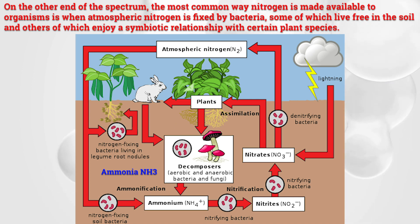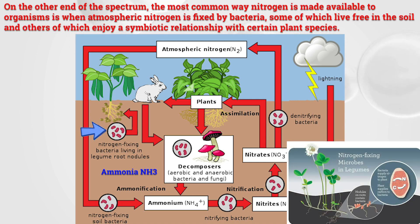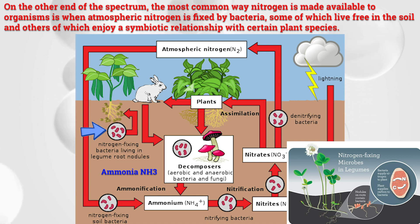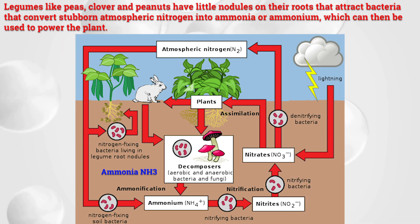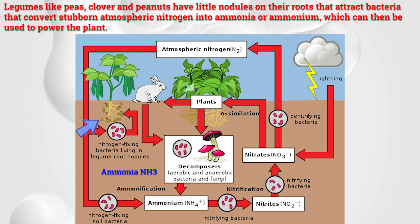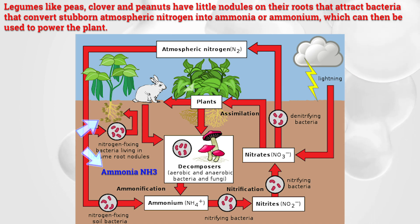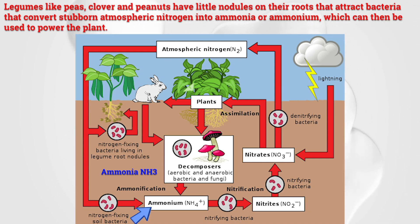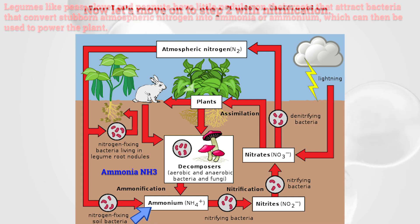The most common way nitrogen is made available to organisms is when atmospheric nitrogen is fixed by bacteria — some of which live freely in the soil, and others which enjoy a symbiotic relationship with certain plant species. Legumes like peas, clover, and peanuts have little nodules on their roots that attract bacteria, which convert atmospheric nitrogen into ammonia or ammonium that can then be used to power the plant.